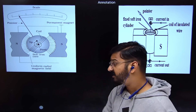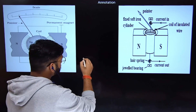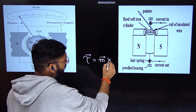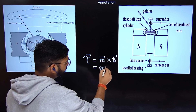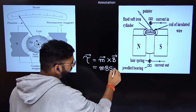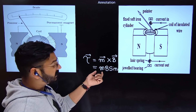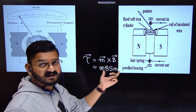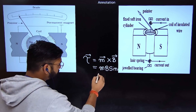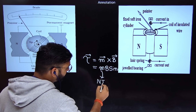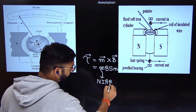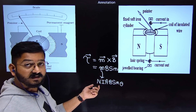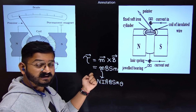The advantage of a radial field: since torque τ = m × B = m·B·sinθ, where m is the magnetic moment, B is the magnetic field, and θ is the angle between them. Here m can also be written as N·I·A, where N is the number of turns, I is the current, and A is the area of the loop.